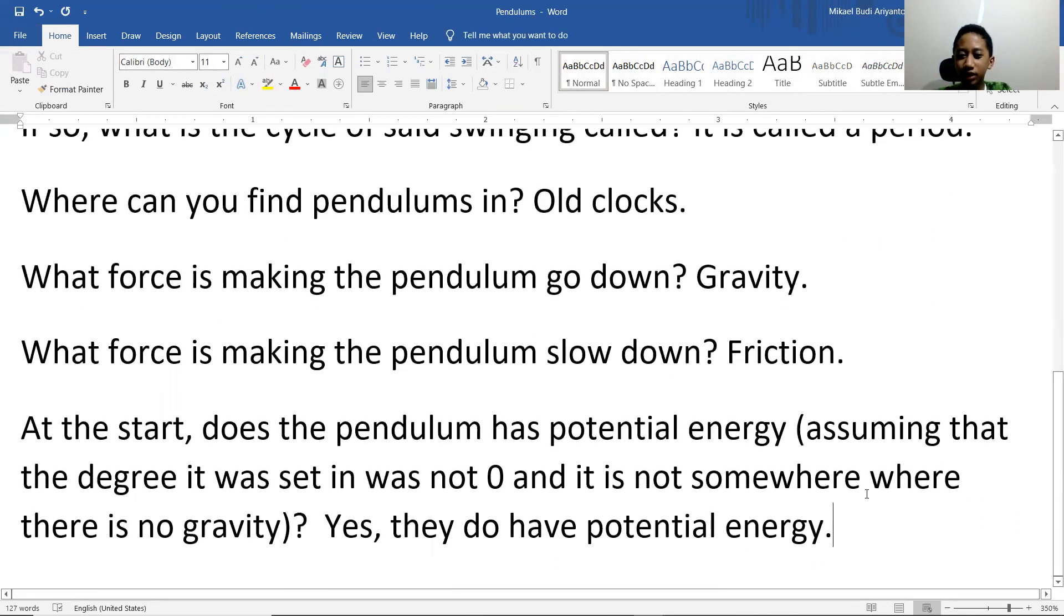Why am I saying not somewhere where there is no gravity? The pendulum will not swing when there is no gravity, even if you set it like more than zero degrees. But then you have trouble - where is the zero degrees? Because no gravity equals no orientation, unless you have a marker.